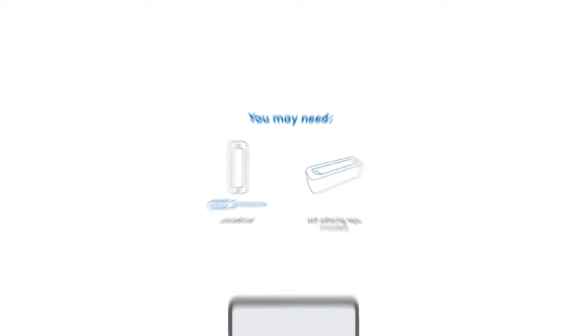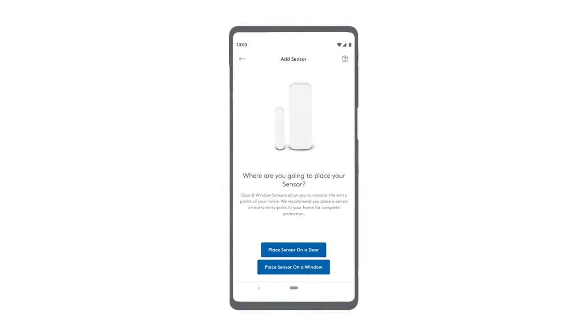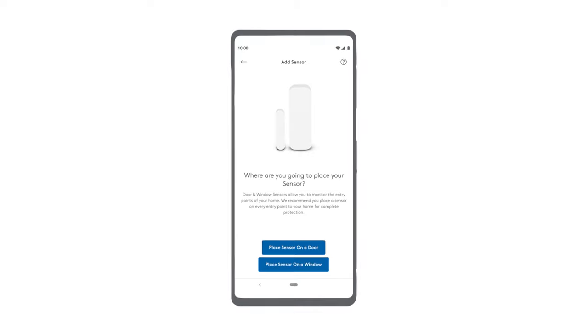After adding this device to the ADT Plus app, indicate whether you're using the sensor on a door or a window. We recommend having one on every entryway to your house for complete protection.